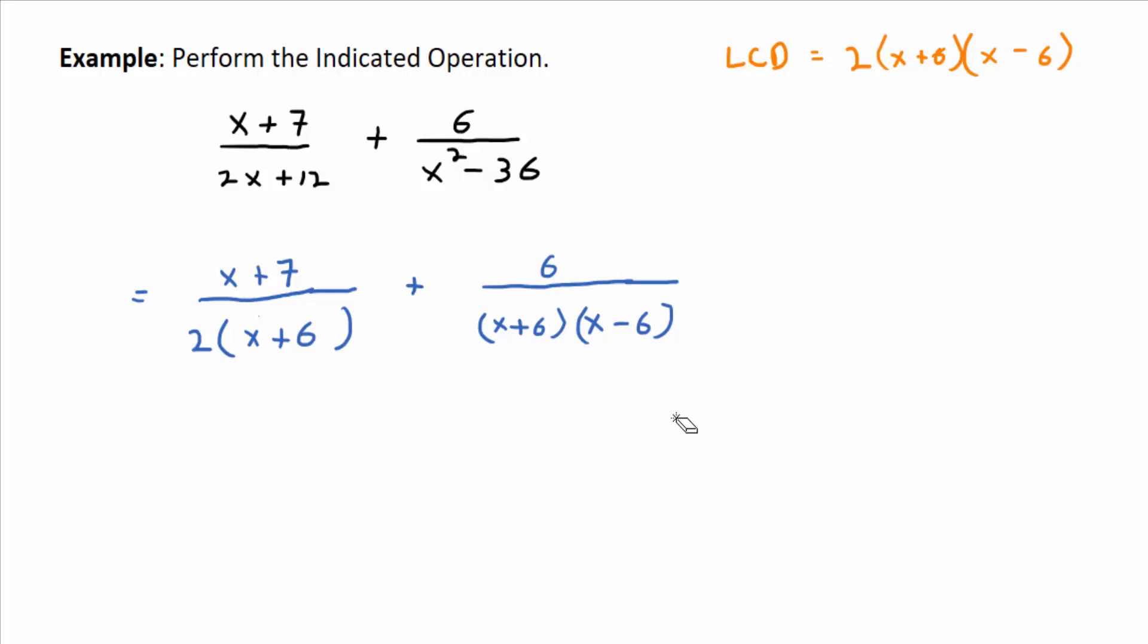Getting everything in terms of the LCD: step two says you've got to multiply numerator and denominator by what's missing from the LCD in any of the terms, right? So look at this first term, x plus 7 divided by 2 times quantity x plus 6. What factor is it missing from the LCD? The x minus 6. So you're going to multiply numerator and denominator by x minus 6. Notice I put parentheses around the x plus 7.